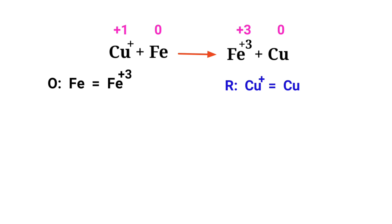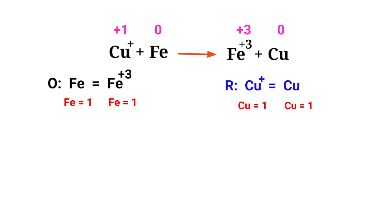Now you can balance the number of atoms in the 2 half reactions. In both the oxidation half reaction and the reduction half reaction, the numbers of atoms are already balanced.